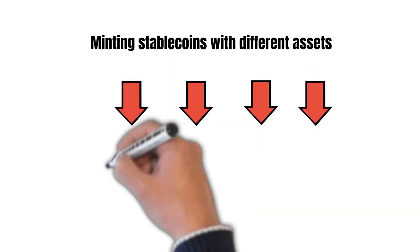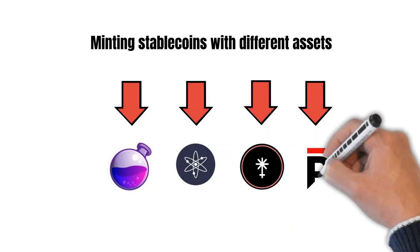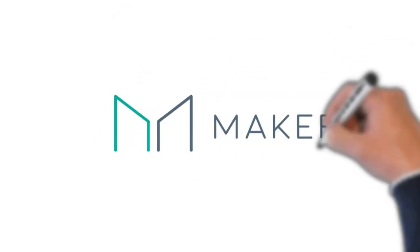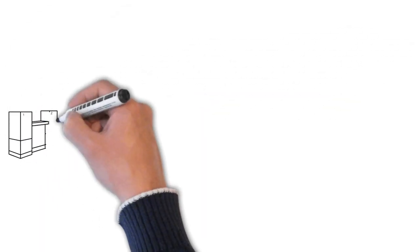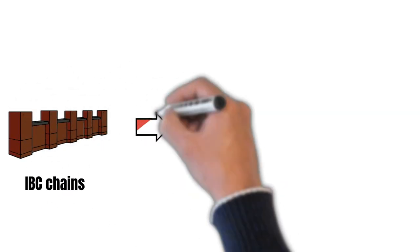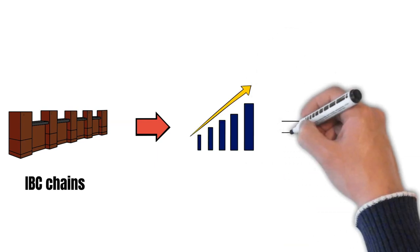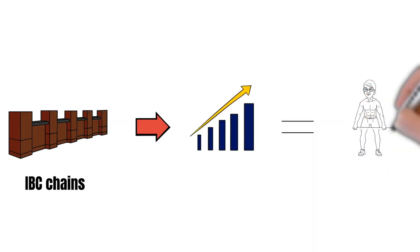That means users can use their Osmo, Atom, Juno and XPRT to borrow stablecoins against them. The whole thing basically works like MakerDAO, but there are theoretically no limits to the assets we can use. As more and more chains are adopting IBC, I can imagine RUN becoming the dominant stablecoin protocol in the interchain world.